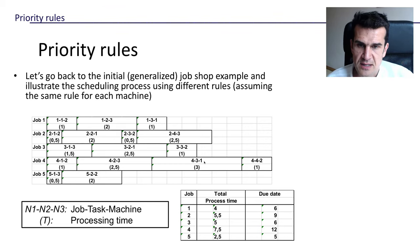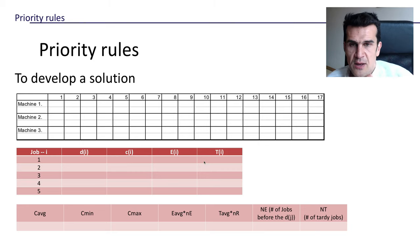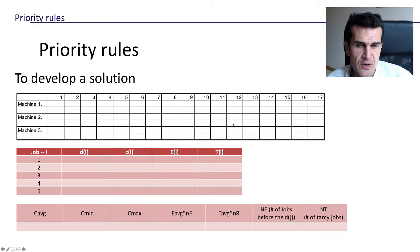All that you can see in this slide defines a job shop problem. What we recommend you do is apply different priority rules to this job shop problem so you fully understand how each priority rule works. To do that, you can use this template, because you will have to do the Gantt chart of the scheduling.